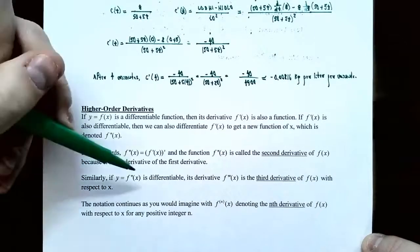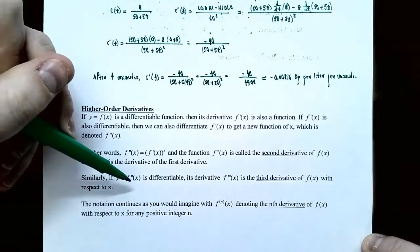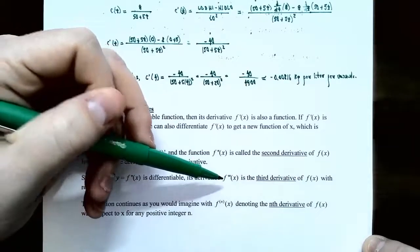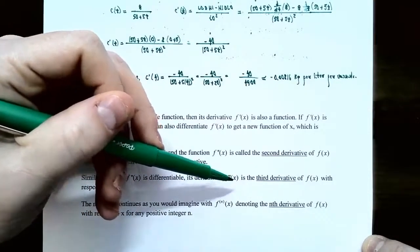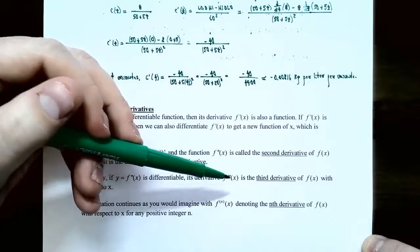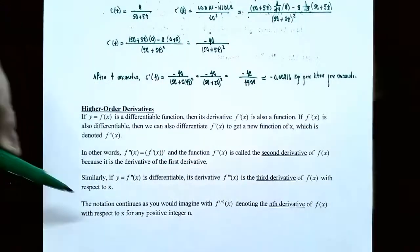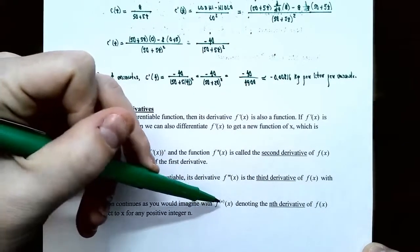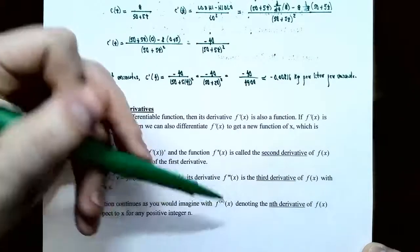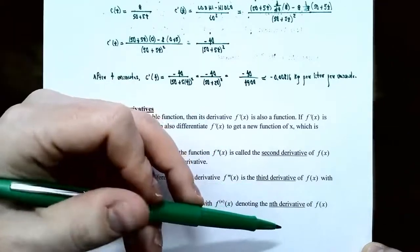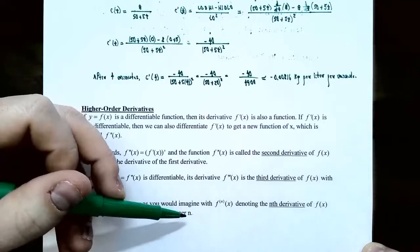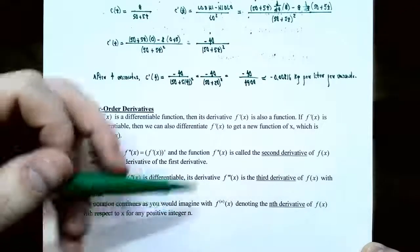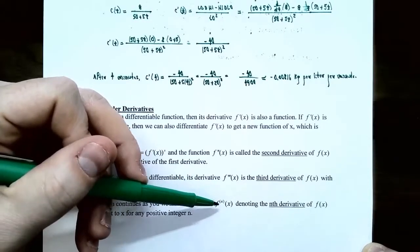This notation continues indefinitely. The nth derivative is denoted as f superscript (n) of x, where n indicates how many times you take the derivative. Prime notation is used for the first, second, and third derivatives. Starting with the fourth derivative, you use the superscript notation with the number n in parentheses to indicate how many derivatives have been taken.